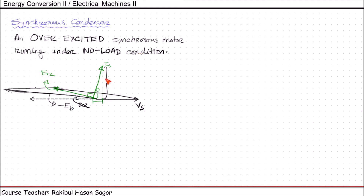We can see from here that the synchronous condenser has a leading power factor. This makes it useful for power factor correction of industrial loads. We know both transformers and induction motors draw lagging or magnetizing currents from the line. On light loads, the power drawn by induction motor has a large reactive component and the power factor has a low value. So if we connect a synchronous condenser in parallel with those loads, the synchronous condenser will supply some of the reactive power required by induction motors. Eventually this improves the overall power factor and reduces the reactive current required from the grid.